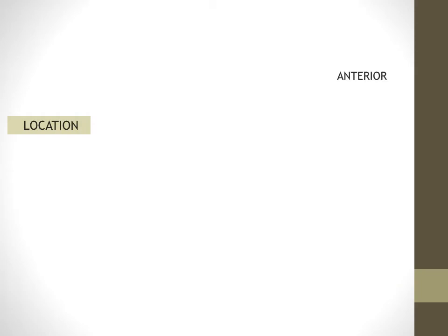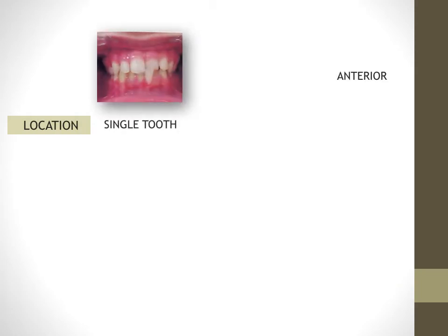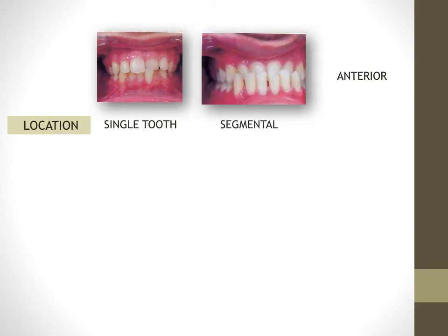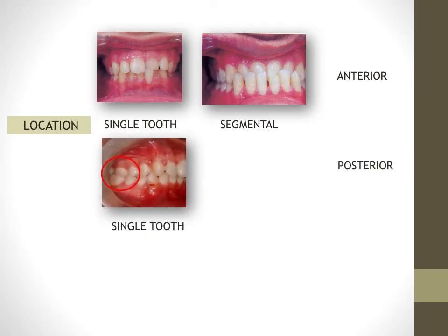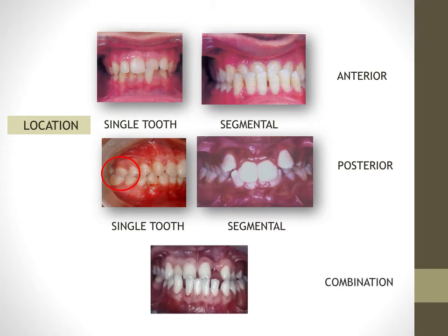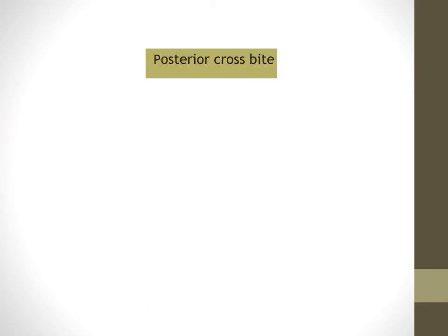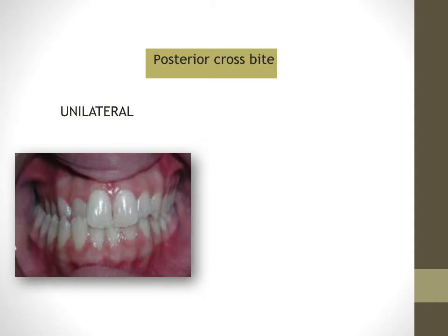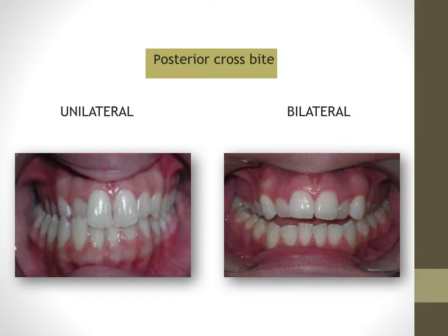Depending upon location, crossbite can be categorized as anterior — limited to a single tooth or an entire segment — or posterior, again limited to a single tooth or segmental in nature. A combination of anterior and posterior crossbite is called a complete crossbite. Posterior crossbite can further be classified as unilateral, occurring on one side, or bilateral, occurring on both sides.